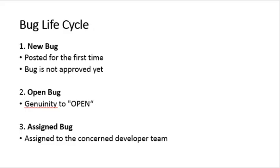Now let us look into the bug life cycle. Whenever a tester reports a bug in the bug reporting tool, the status of the bug will change from New to Closed. The first status is New. Whenever the software tester finds a bug, he will report it in the bug reporting tool and the status will be changed to New, meaning it is not approved yet.